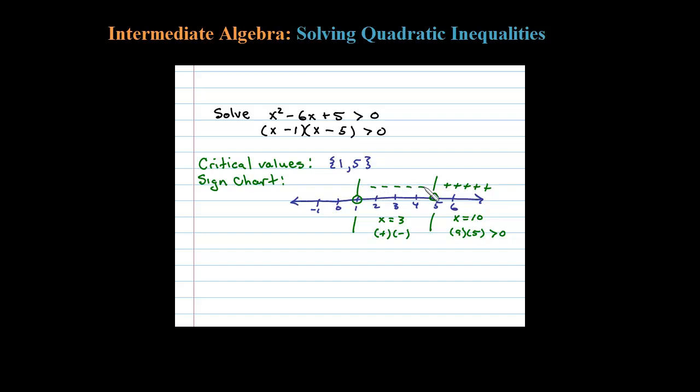And then in the left region over here, let's choose say negative 10. When I substitute in negative 10, negative 10 minus 1 is negative—don't really care what the number is. Negative 10 minus 5 is negative 15, so that's negative as well. And then, negative times a negative is positive, so in that region, any number you choose, the result would be positive.